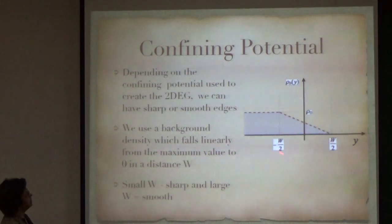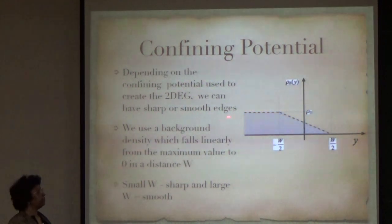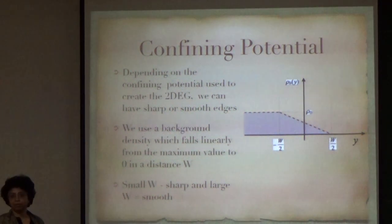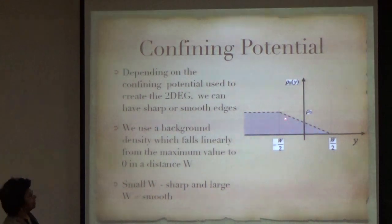At the edge, you have a confining potential. Depending on the confining potential, we can actually have what are called sharp edges or smooth edges. Because the confining potential, here I am using a background positive density potential to give the confining potential.